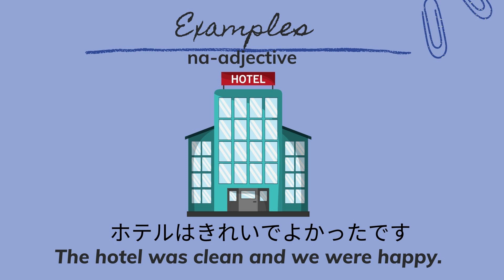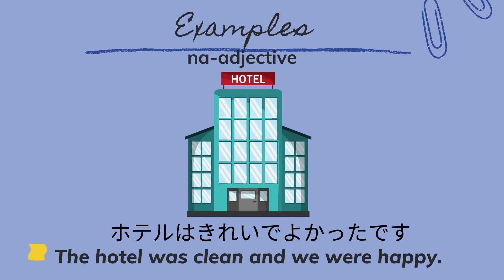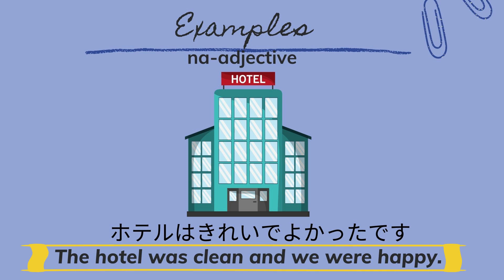Our next example for na-adjective is 'Hoteru wa kirei de, yukata desu,' meaning the hotel was clean and we were happy.